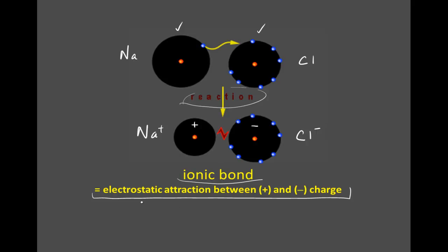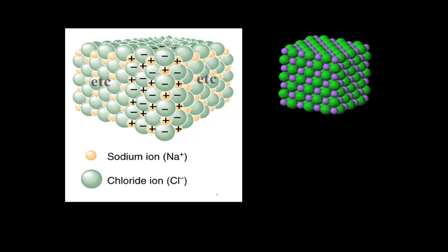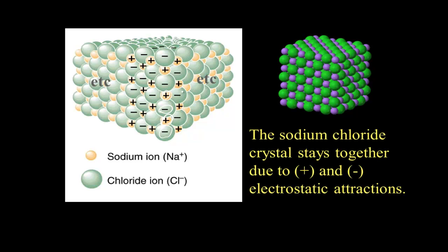The ionic bond is the electrostatic attraction between the positive and negative charge. That opposite charge results in a crystalline structure, where we have an ongoing array of alternating positive and negative that are all attracted to each other, and that keeps the crystal together.